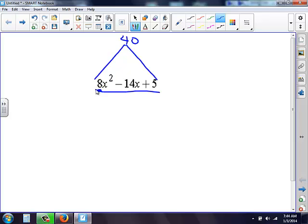Now inside of the pyramid, I'm going to list my factors of 40. I have 1 times 40. I have 2 times 20. I have 10 times 4. And I have 8 times 5.